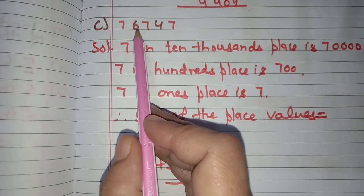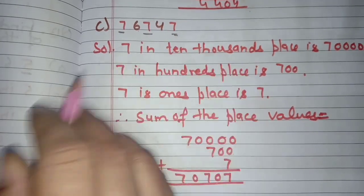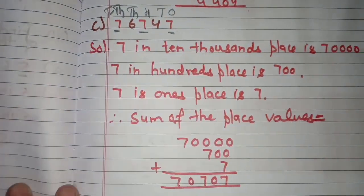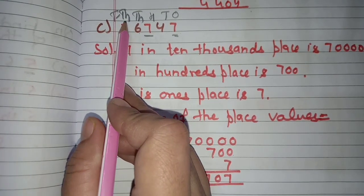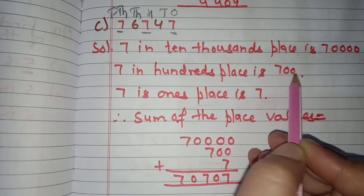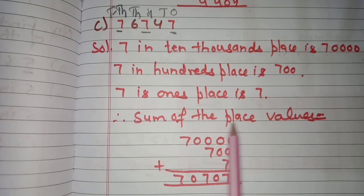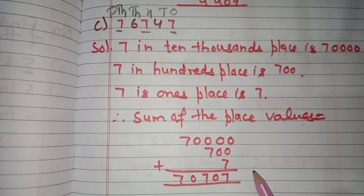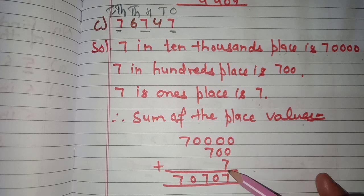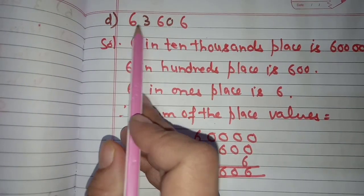Part c: 76,747 — find place values of the three sevens. Ones, tens, hundreds, thousands, ten thousands. Seven in ten thousands place is 70,000; seven in hundreds place is 700; seven in ones place is 7. Sum of the place values: 70,000 + 700 + 7 = 70,707.